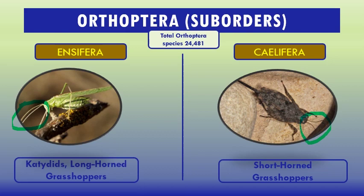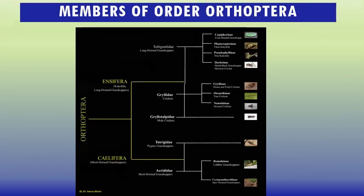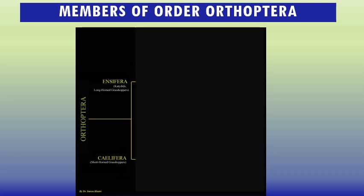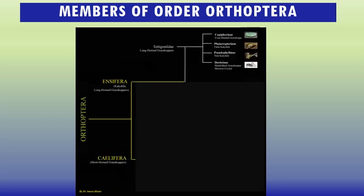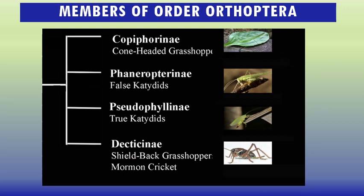This is the classification of Orthoptera into sub-orders Ensifera and Caelifera. We will cover the most important families and sub-families related to agriculture. Ensifera consists of katydids and long-horn grasshoppers and covers three families: Tettigoniidae, Gryllidae, and Gryllotalpidae. Tettigoniidae includes Copiphorinae (cone-headed grasshoppers), Pseudophyllinae (false katydids and true katydids), and shield-backed grasshoppers.